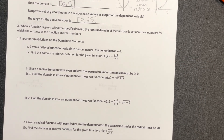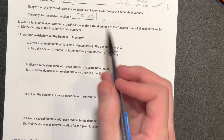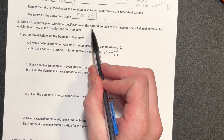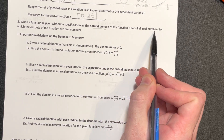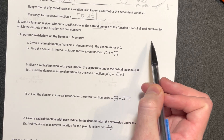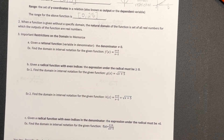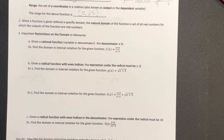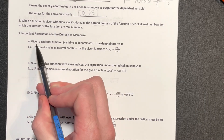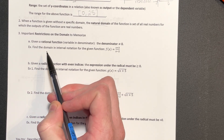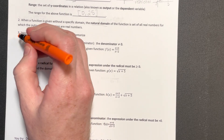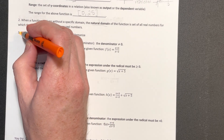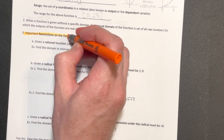When we focus on the domain of a function, the natural domain of a function is all real numbers. But there are certain restrictions based off of the function type. These important restrictions you're just going to have to memorize, but as you think about your parent functions, hopefully they become a little bit easier to memorize.